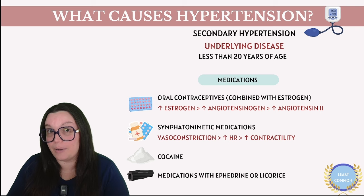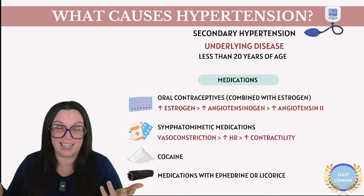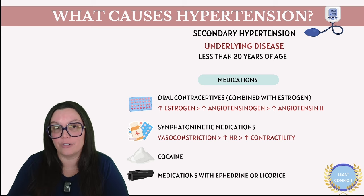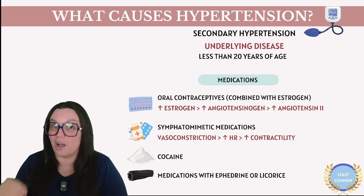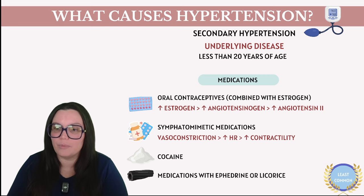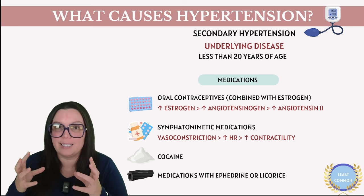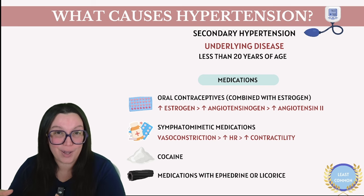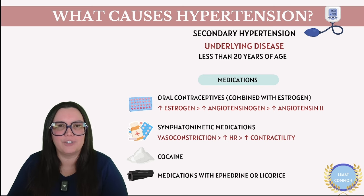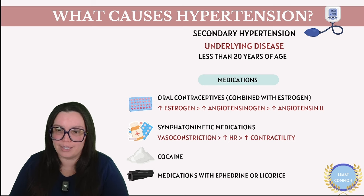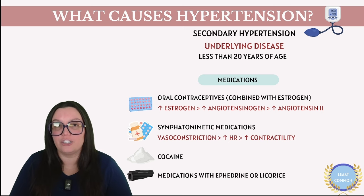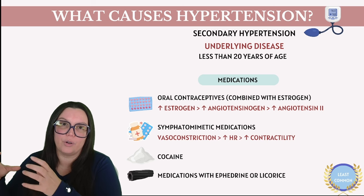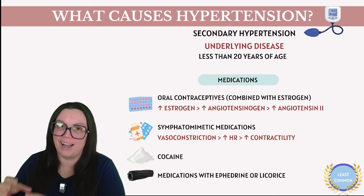One thing you wouldn't think about a lot, but actually comes up when taking care of individuals, is licorice. If taken in very high doses, it contains a chemical compound that mimics the hormone aldosterone, leading to sodium retention, water following salt, and potassium loss — resulting in dangerously low potassium levels, high blood volume, and ultimately high blood pressure. Chronic consumption of licorice or licorice-based products can result in a syndrome known as pseudo-aldosteronism, characterized by hypertension and electrolyte imbalances, because it mimics aldosterone but is not actually caused by aldosterone.